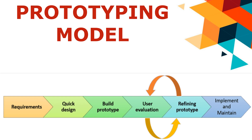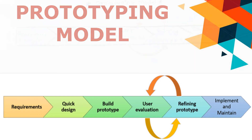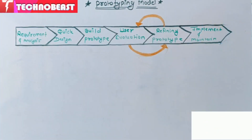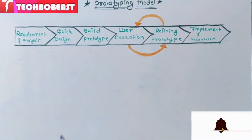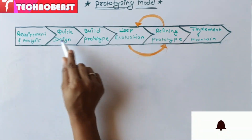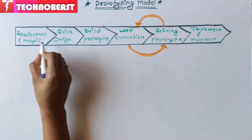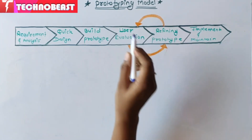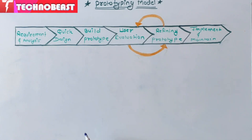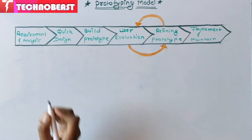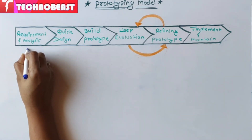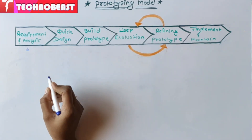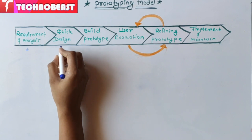In this model, a prototype of the end product is first developed, tested, and refined as per customer feedback repeatedly, till a final acceptable prototype is achieved, which forms the basis for developing the final product. Now we are going to see the prototyping model phases. There are six phases included inside the prototyping model.